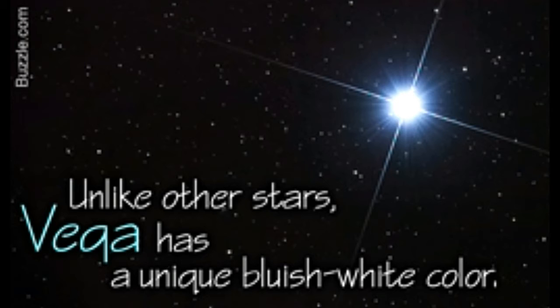Fascinating, isn't it? Here are some more interesting facts about the star Vega. Vega gets its name from the Arabic word waki, which means falling or swooping. Vega is the fifth brightest star in the sky, and the third brightest visible from the mid-northern parts of the Earth, after Arcturus and Sirius.